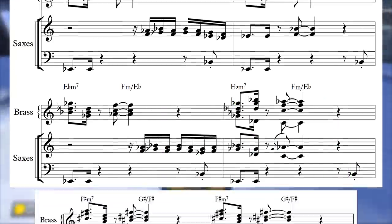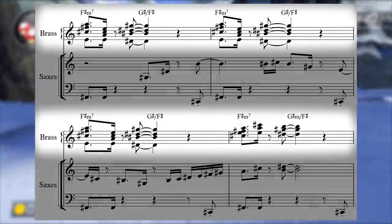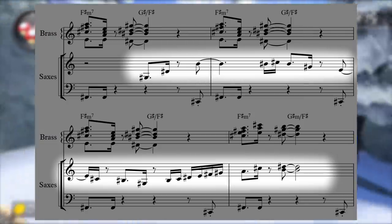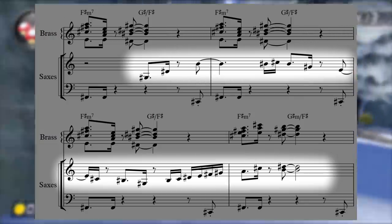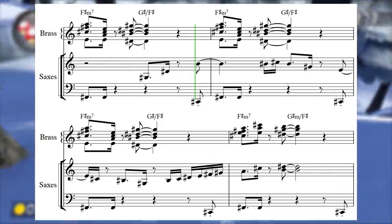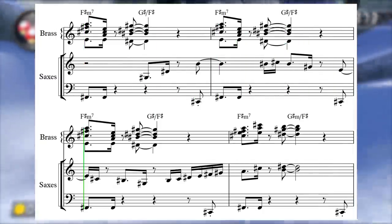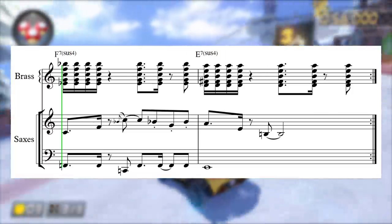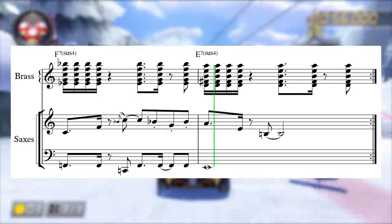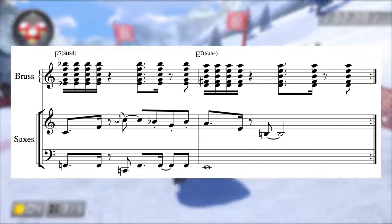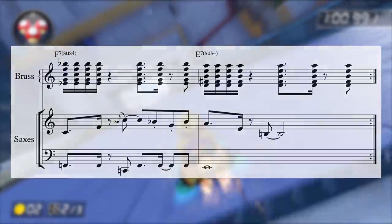Finally, the F sharp section brings the tension to a boiling point as the brass moves up to an insanely high range, while the saxes and guitar take on a new fuller and more harmonically tense accompanying line. This all builds into an eruption of brass shots that set up a return to the A minor at the top of the section.